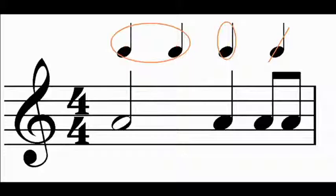This example, where we have a minim, a crotchet, and two quavers, is one of many combinations of notes that we can use to create a 4/4 bar.